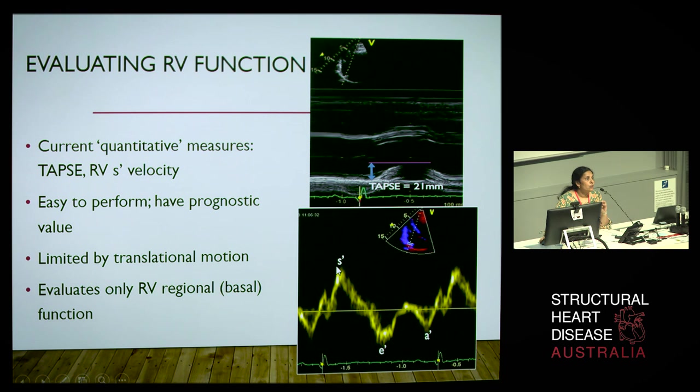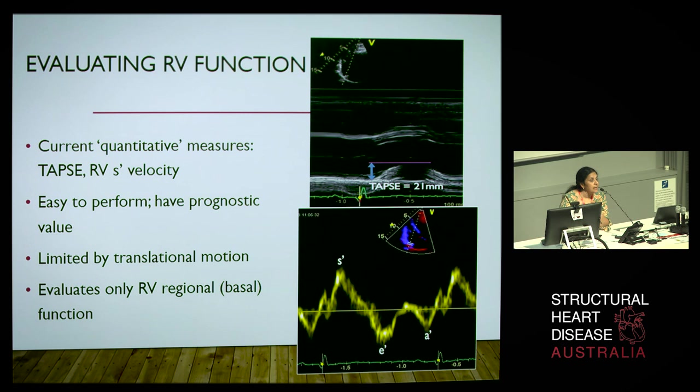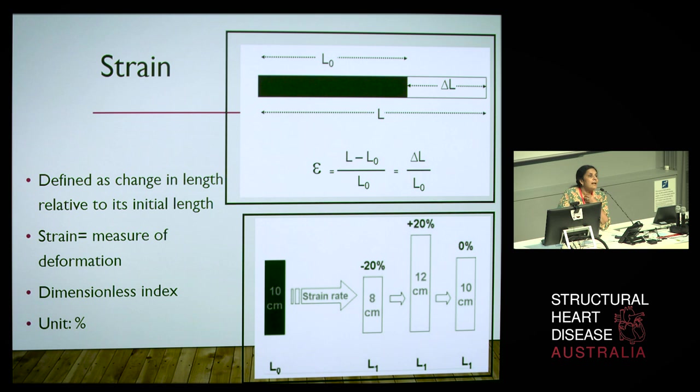The two disadvantages of these techniques are that they are influenced by translation — and the right ventricle does move quite briskly — and second, they can evaluate only regional function. So you may have what appears to be normal at the base but altered function in the mid and apical segments. And so we move on to this relatively new modality, which is strain.